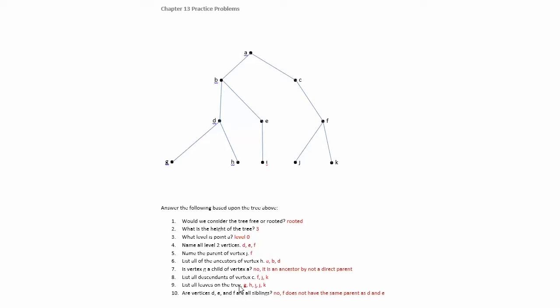List all leaves on the tree. The leaves are going to be the elements on the last level. So we're going to have G, H, I, J, and K.